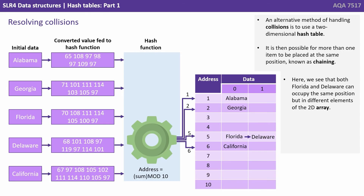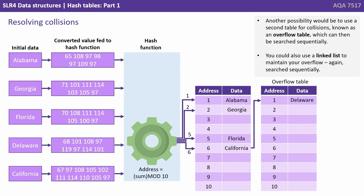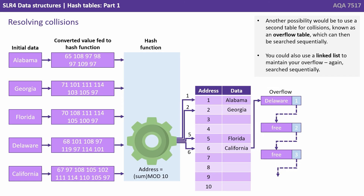An alternative method of handling collisions is to use a two-dimensional hash table. It's then possible for more than one item to be placed at the same position, known as chaining. Here we see that Florida and Delaware can occupy the same position, but in different elements of a 2D array. Another possibility would be to use a second table for collisions, known as an overflow table, which can then be searched sequentially. You could also use a linked list to maintain your overflow, again searched sequentially.